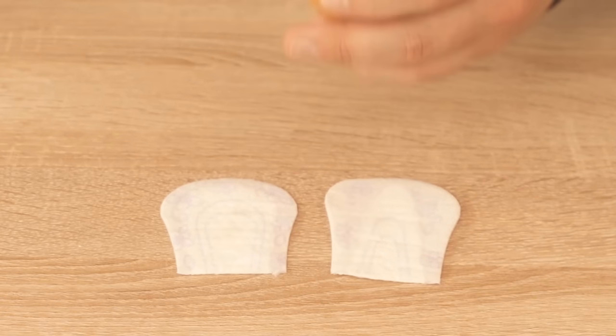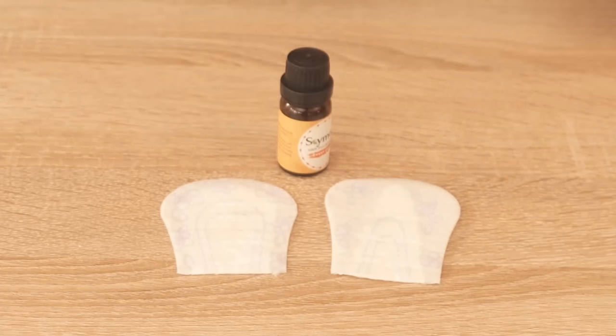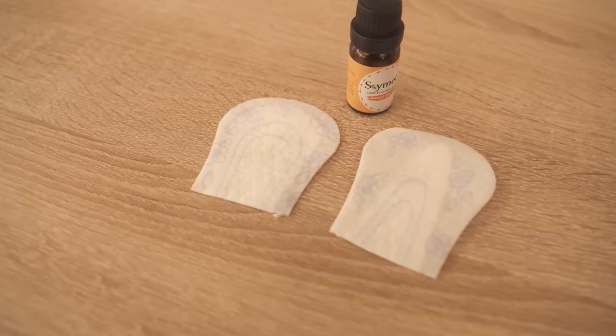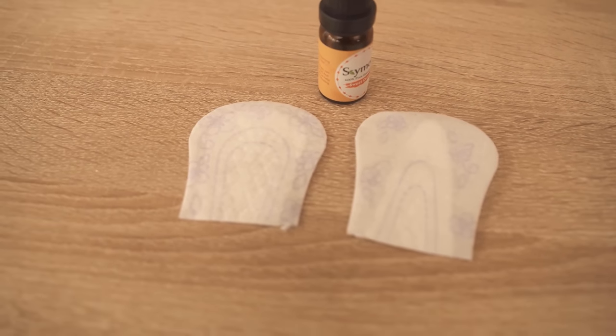Now we just add a few drops of our essential oil onto the panty liner and then we have it ready to go, because now we have created a small scent dispenser here, which we can stick somewhere because of its adhesive property.